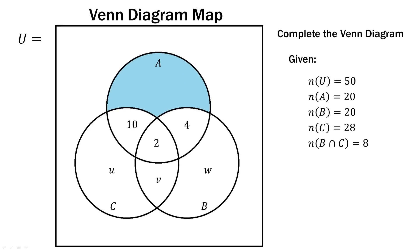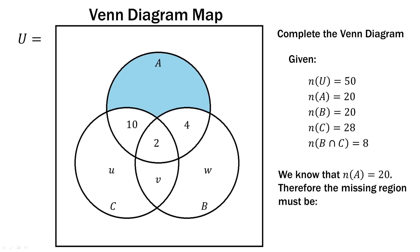Let's find the missing part of A, which we're calling T. We know that the number of elements in A has to add up to 20. So we can find that missing region using subtraction: 20 minus the 10 on the left, minus the 2 in the triple intersection, minus the 4 common to A and B — that gives us 4. So the missing region in A is 4. And we can verify: 10 plus 2 plus 4 plus 4 equals 20. So that's the first piece.